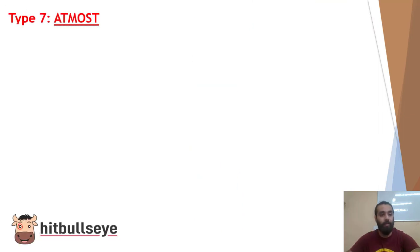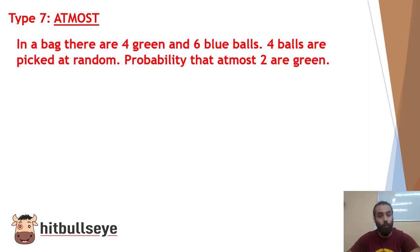Coming to the next part, that is at most. Now, you have to keep the connecting word at most. So in a bag, there are 4 green and 6 blue balls. 4 balls are picked at random. Probability that at most 2 are green. Now, which is at most,